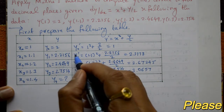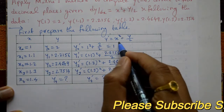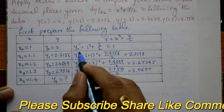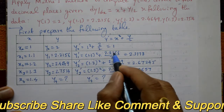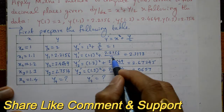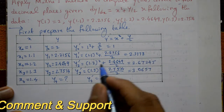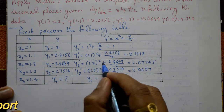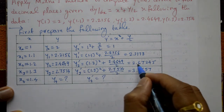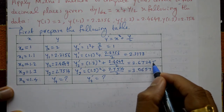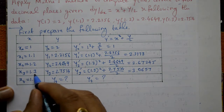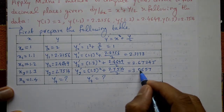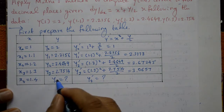First, find y0' by substituting x=1 and y=2: 1² + 2/2 = 2. Next, y1' = 1.1² + 2.2156/2 = 2.3178. Then y2' = 1.2² + 2.4649/2 = 2.67245. Finally, y3' = 1.3² + 2.7514/2 = 3.0657.